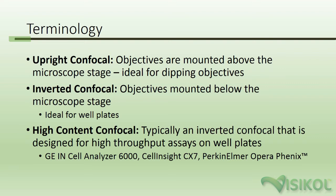With an inverted confocal, the objective on the microscope is mounted below the tissue that is to be imaged. This type of system is ideal for cell culture imaging but is limited in that typically only air or oil objectives can be used, which limits the depth of imaging to 500 to 800 microns. A high-content confocal microscope is designed to image thousands of tissues a day in a well-plate format for high-throughput applications. Typically, these instruments are inverted confocal microscopes, which limits their imaging depth.